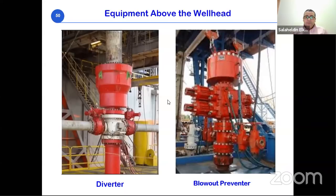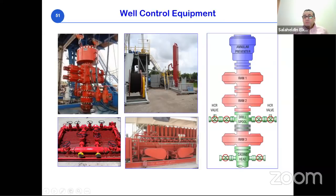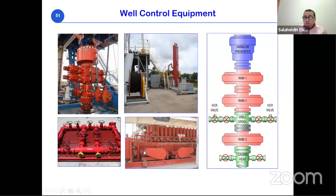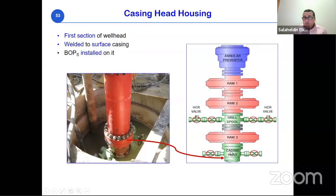The blowout preventer is installed above the casing head — the first wellhead component welded to the surface casing, which is also fixed in the cellar below floor level. The BOP stack includes the BOP itself, a vertical separator, a choke manifold, and the accumulator control unit. The casing head is the foundation of the wellhead and must be in place before the BOP can be installed.